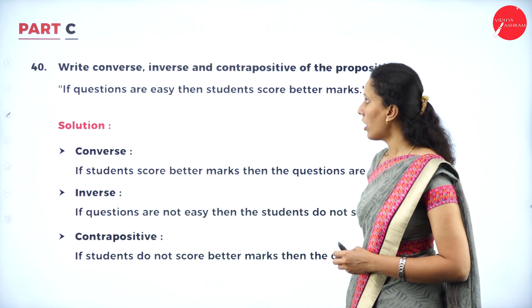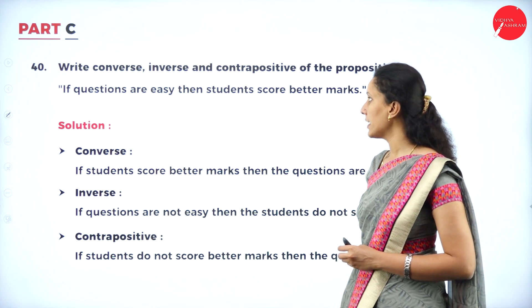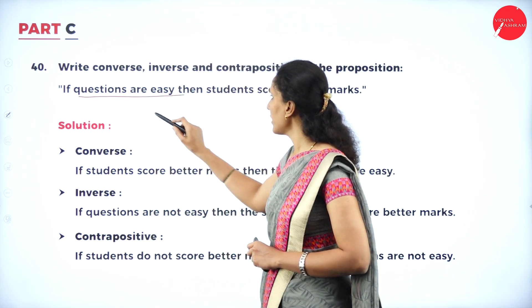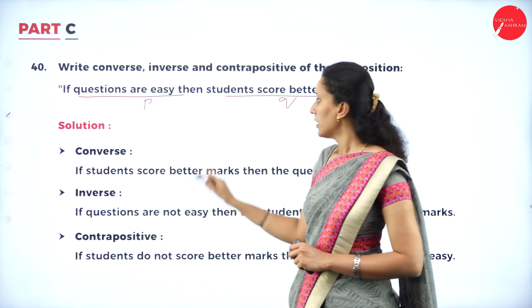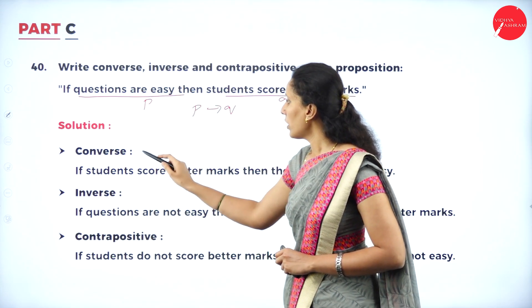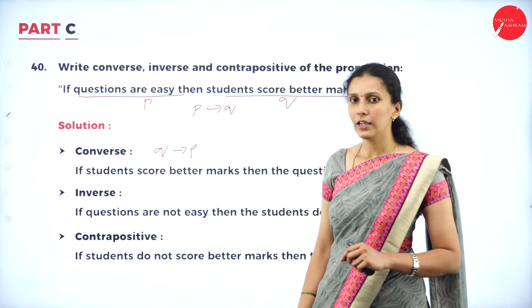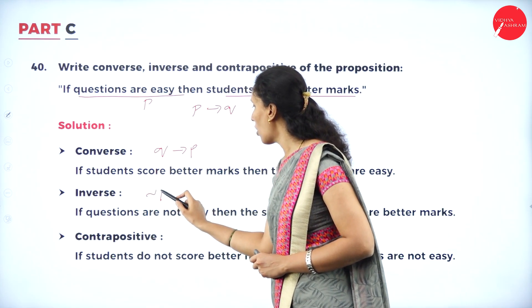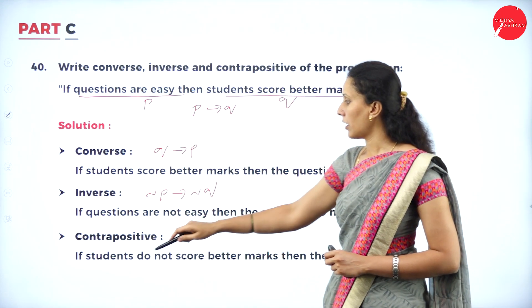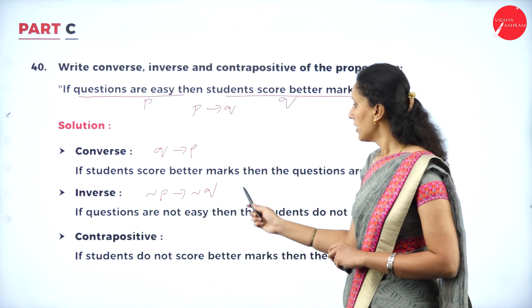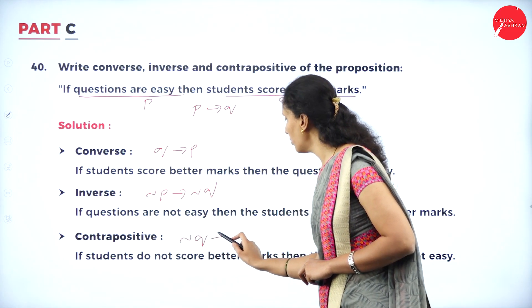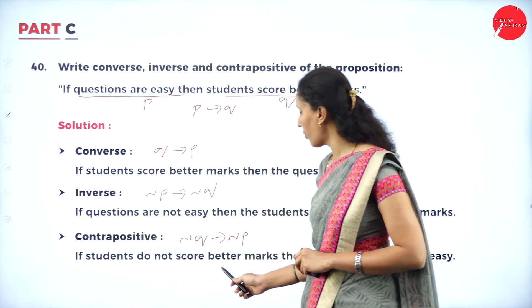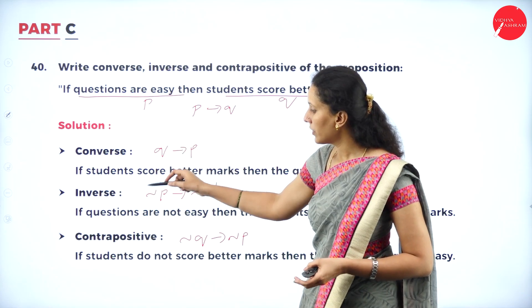Write the converse, inverse, and contrapositive of: 'If questions are easy, then students score better marks.' Let p = questions are easy, q = students score better marks, so the proposition is p → q. Converse (q → p): If students score better marks, then questions are easy. Inverse (¬p → ¬q): If questions are not easy, then students do not score better marks. Contrapositive (¬q → ¬p): If students do not score better marks, then the questions are not easy. One mark each, total 3 marks.